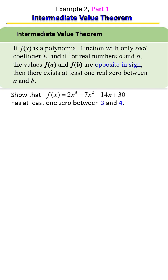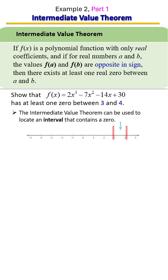So the Intermediate Value Theorem is a method that you can use to locate an interval that contains a zero. So we want to know if the interval between three and four, if we were to look at that on a number line, it would look like so.